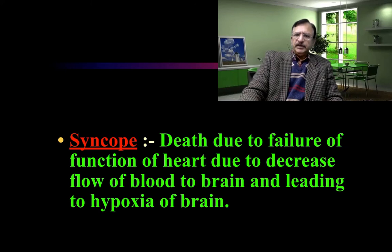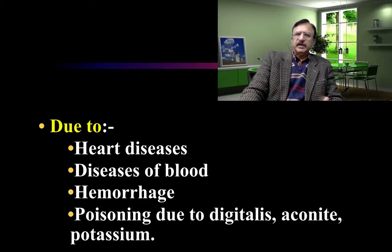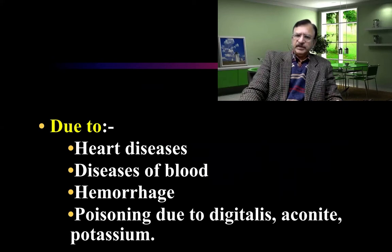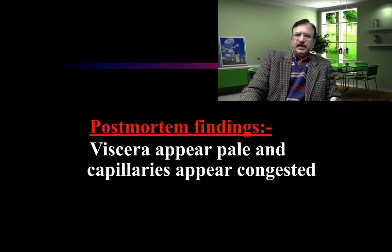In syncope, death is due to failure of the function of the heart, resulting in decreased flow of blood to the brain leading to hypoxia of the brain. This occurs in conditions like heart disease, diseases of the blood, hemorrhage, and poisoning — such as digitalis, aconite, or potassium — which can be toxic to the heart. At autopsy, the viscera appears pale and the capillaries will be congested.